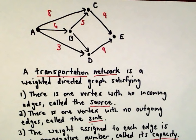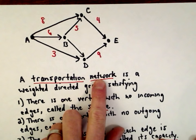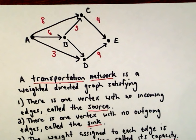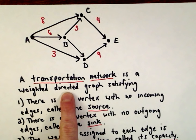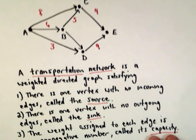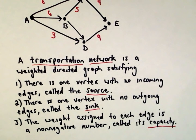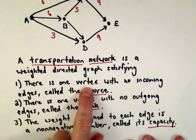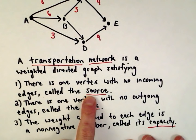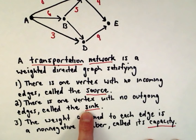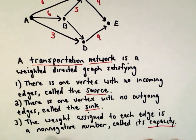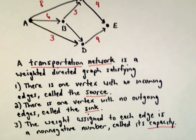A transportation network — or sometimes just called a network — is a weighted directed graph satisfying three conditions: there's going to be one vertex with no incoming edges called the source, one vertex with no outgoing edges called the sink, and we assign weights to each edge. Each weight is a non-negative number called its capacity.